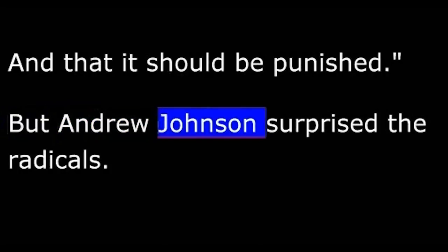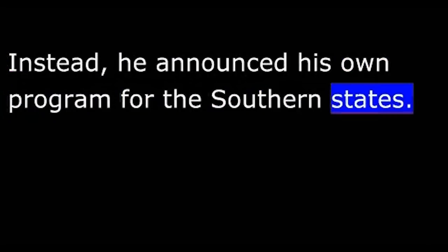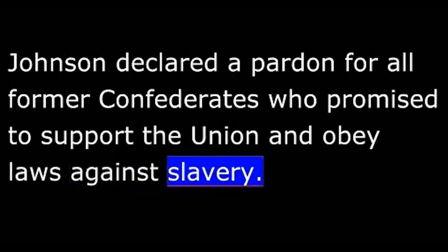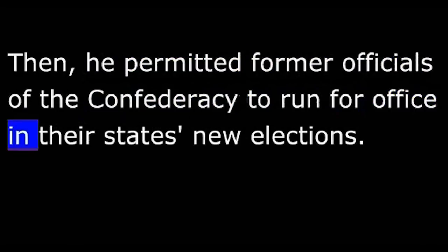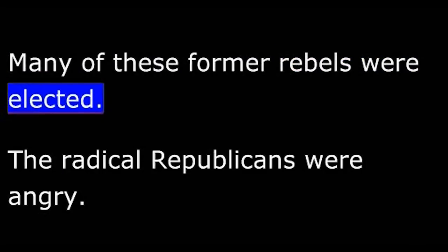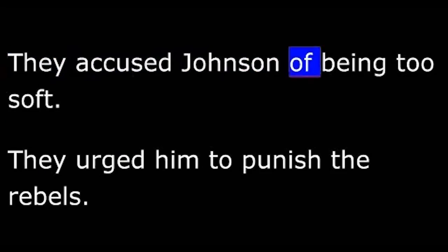But Andrew Johnson surprised the radicals. He did not call the special session of Congress. Johnson declared a pardon for all former Confederates who promised to support the Union and obey laws against slavery. Then he permitted former officials of the Confederacy to run for office in their state's new elections. Many of these former rebels were elected. The radical Republicans were angry. They saw these elections as proof that the South had not really changed. They accused Johnson of being too soft and urged him to punish the rebels.